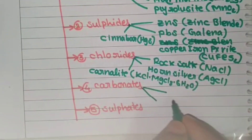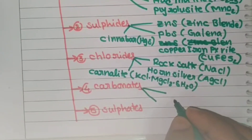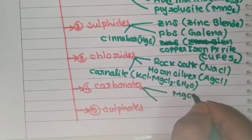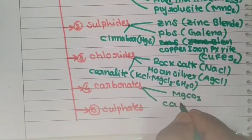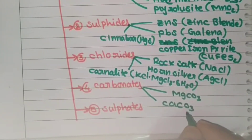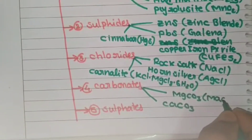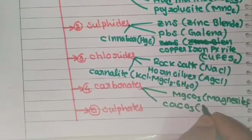Coming to the carbonates, there are only two. The first is MgCO3, which is named Magnesite. The second is CaCO3, which is the well-known compound Limestone.